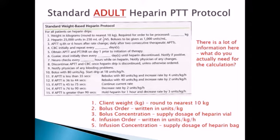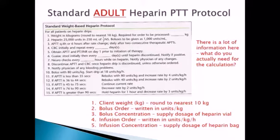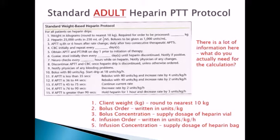In this protocol, number 10 says: bolus with 80 units per kilogram. Third, you need to know the bolus concentration — the supply dosage of the heparin vial. In number two of the protocol, it says boluses are to be given as 1,000 units per milliliter. Fourth, you need the infusion order, written in units per kilogram per hour — number 10 says start drip at 18 units per kilogram per hour. Fifth, you need the infusion concentration from number two: heparin 25,000 units in 250 mL of half normal saline.